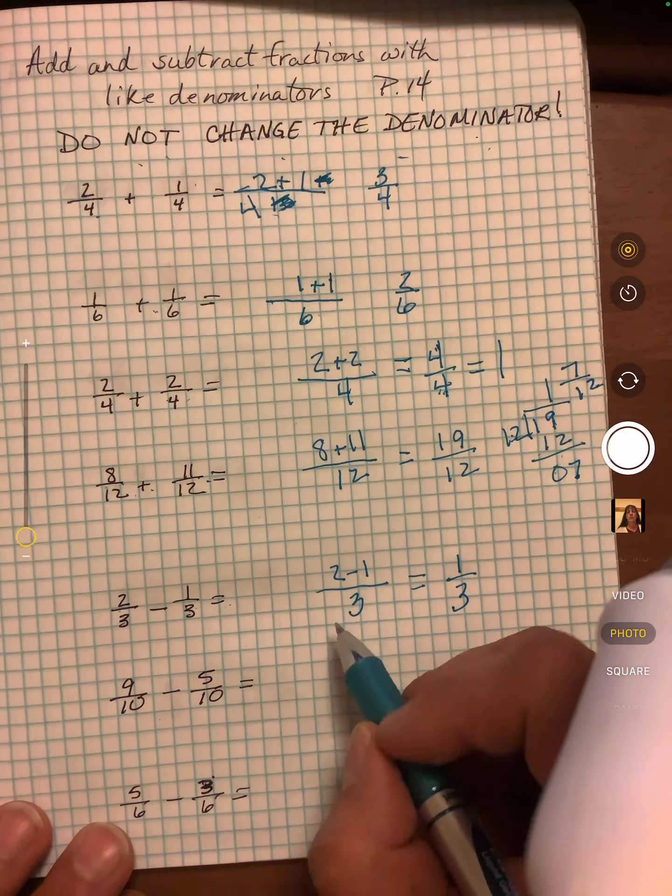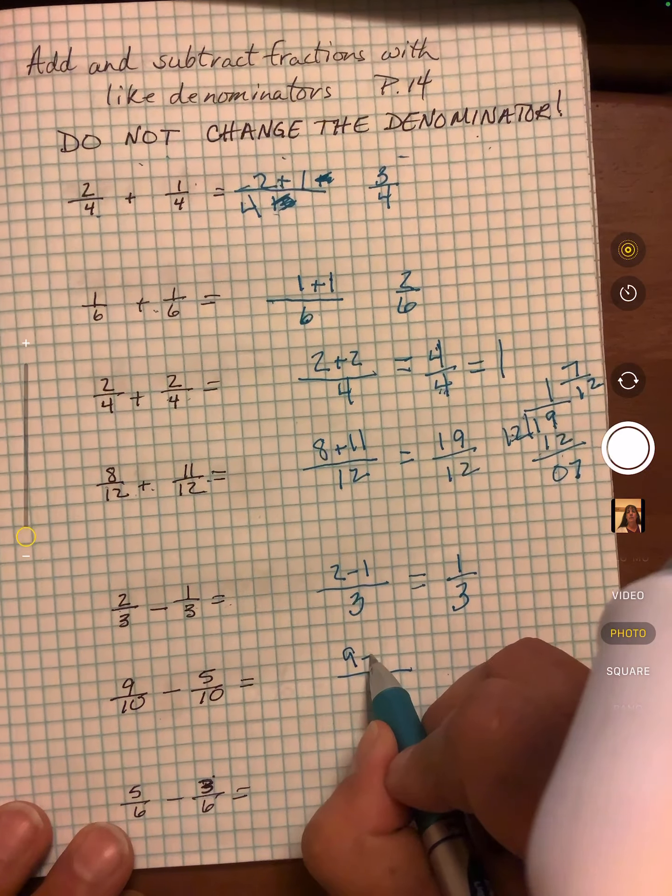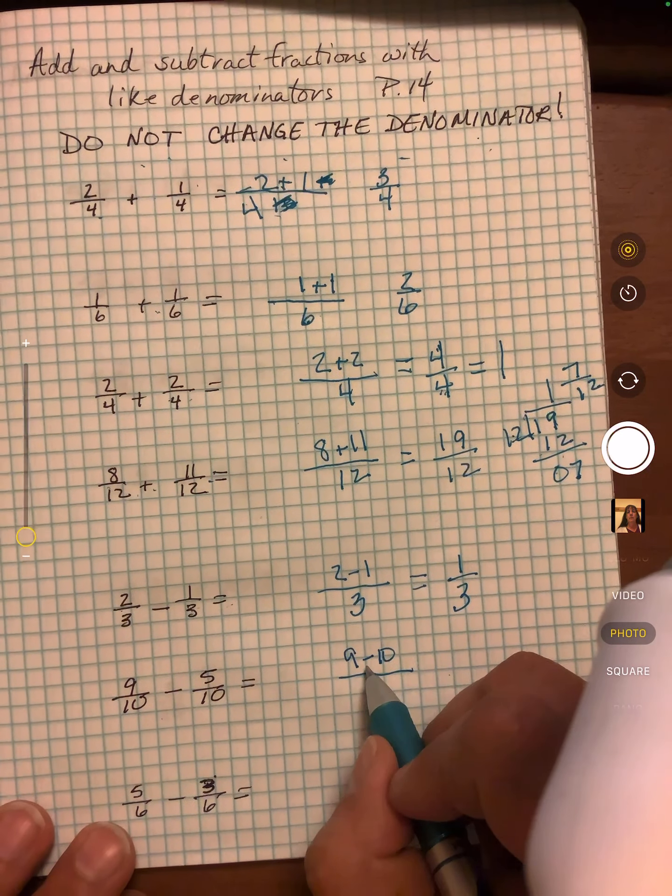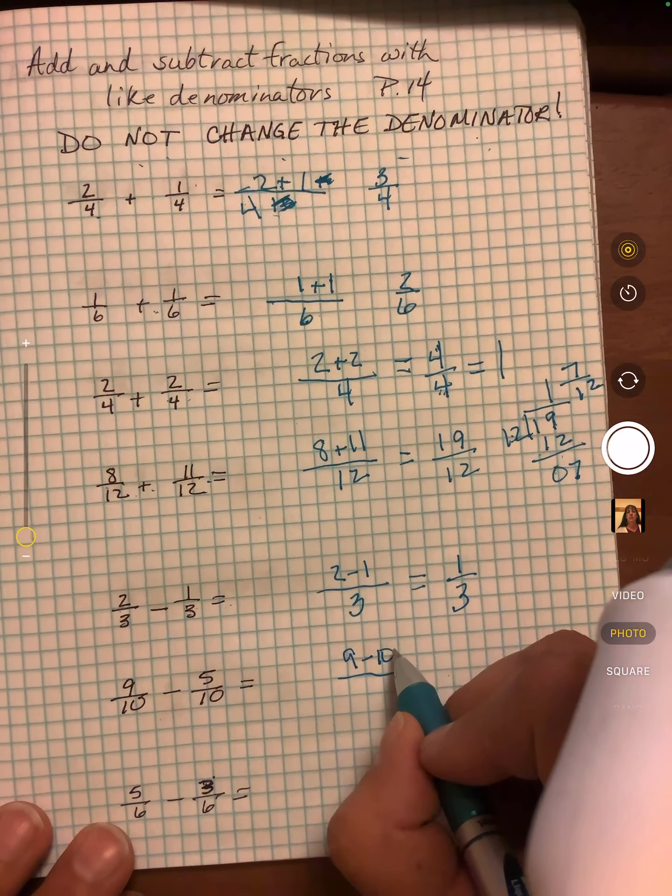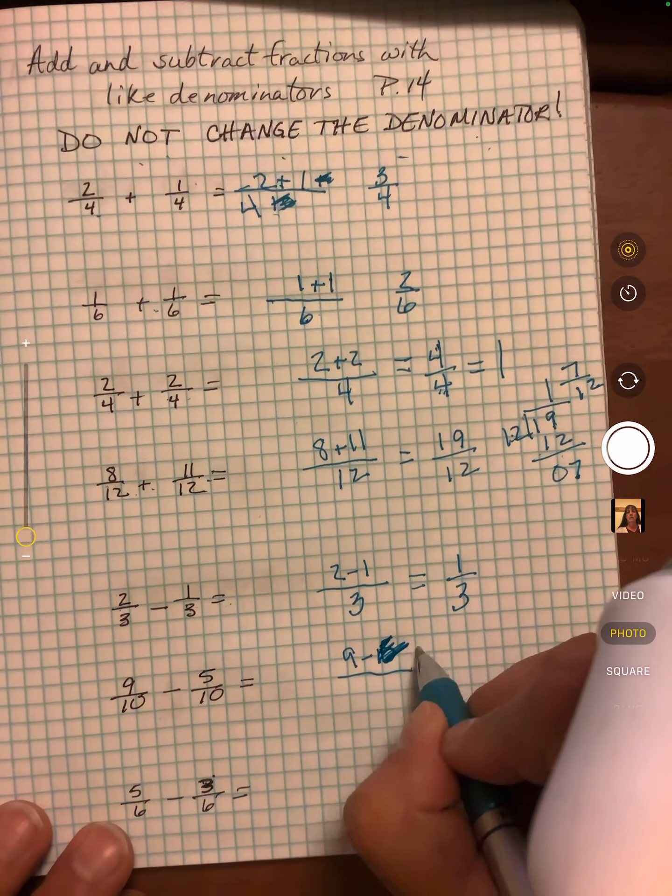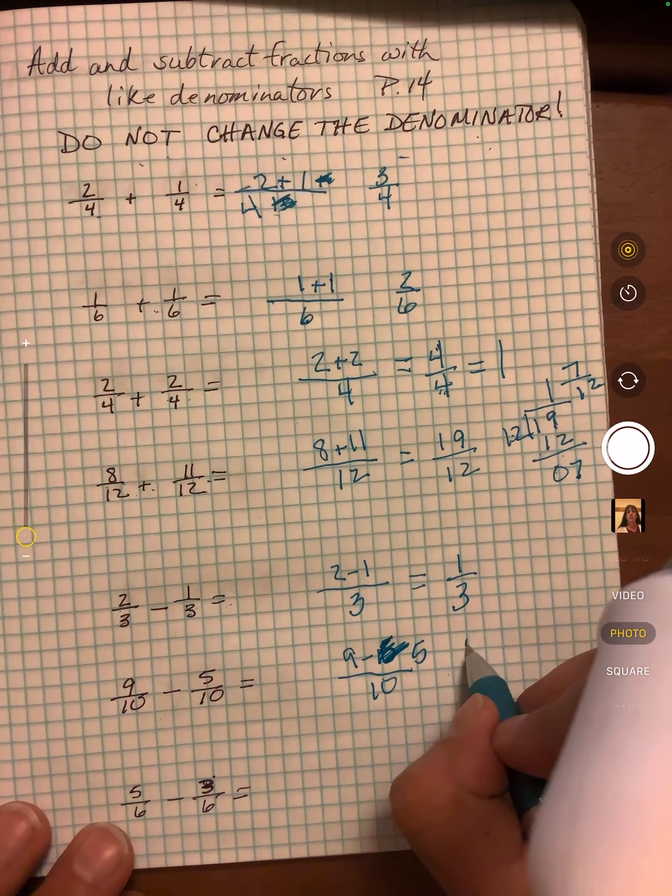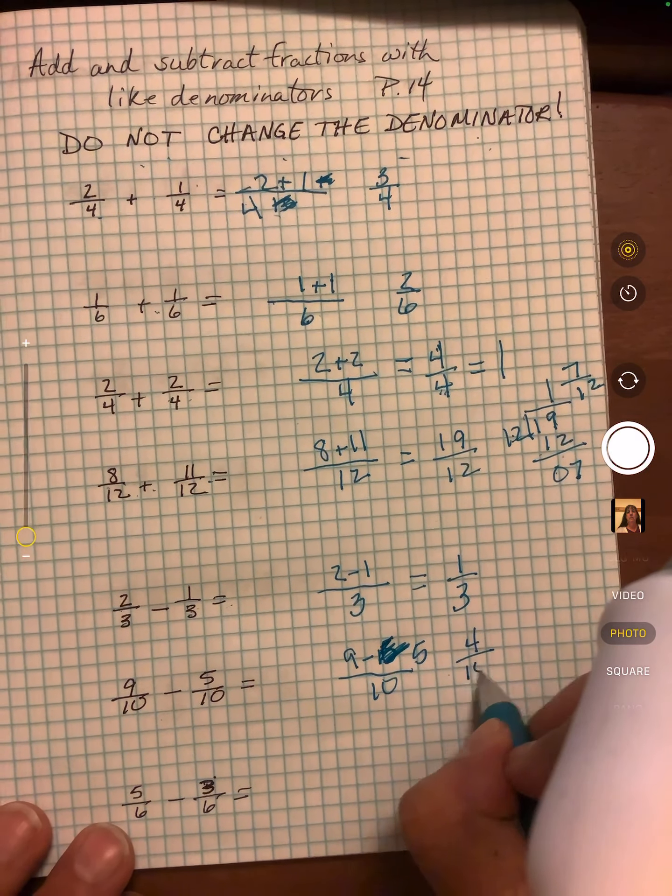Nine tenths minus five tenths. Nine minus five over ten. Nine minus five is four tenths.